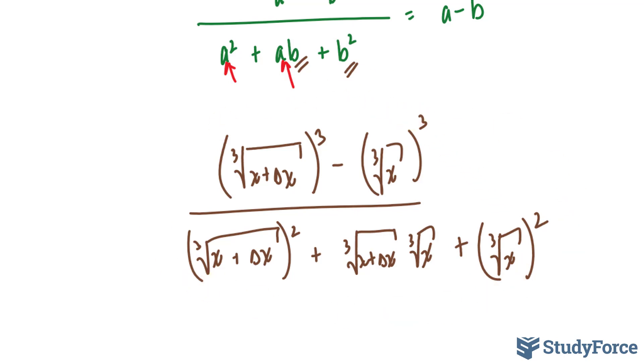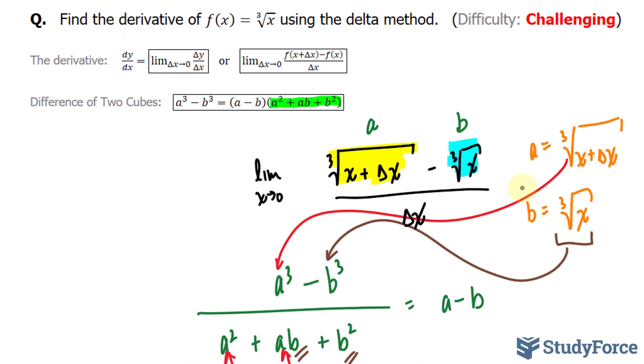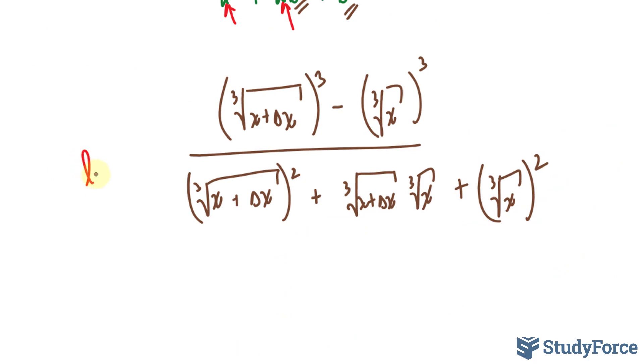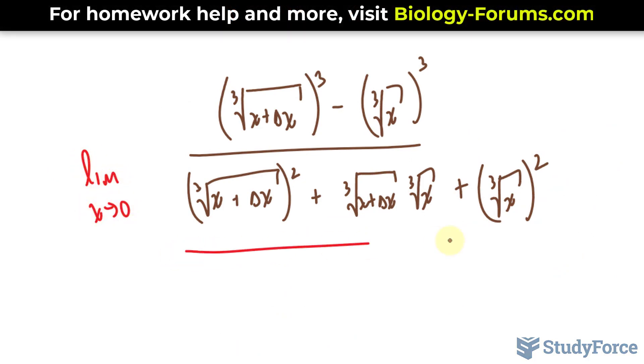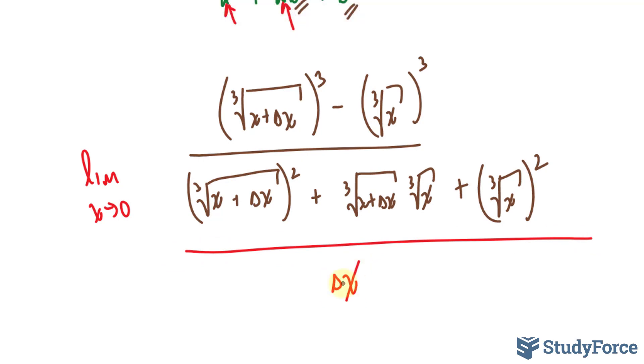All of this will get substituted into the numerator of our limit. So let's go ahead and do that. We have the limit as x approaches 0, all over delta x. Right now, this looks like a mess, and it is. But we can simplify this a lot.